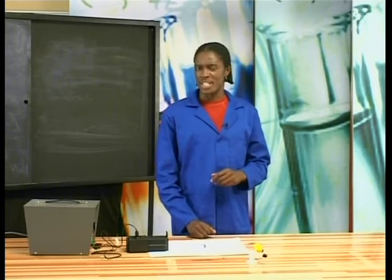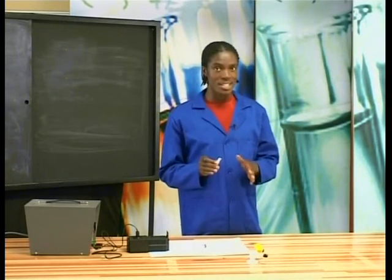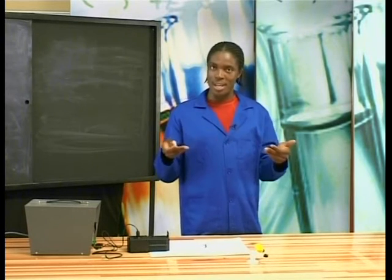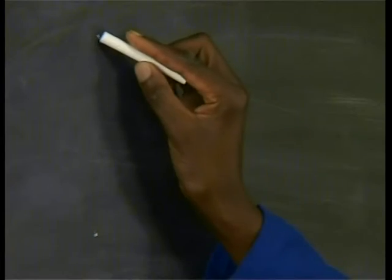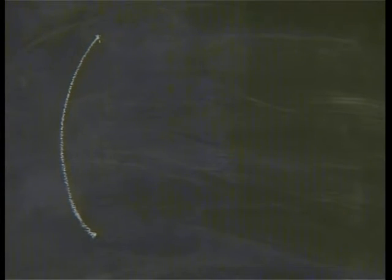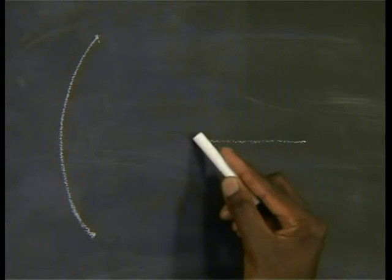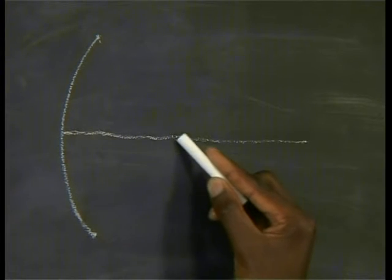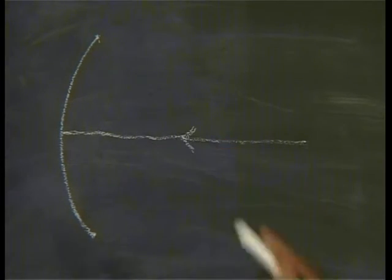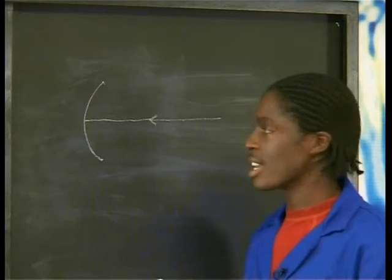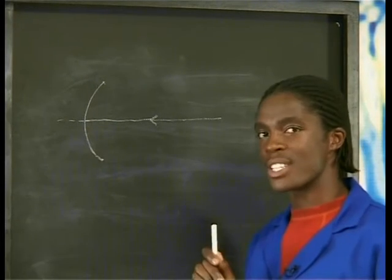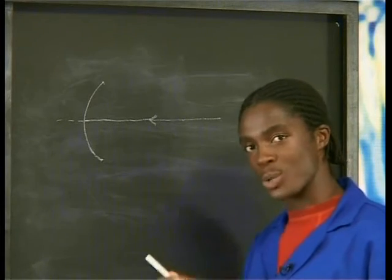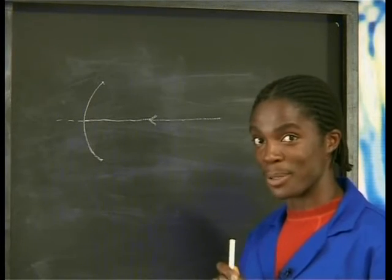Let me show you a ray diagram to explain what we've just seen. When drawing a ray diagram, remember the angle of incidence is always equal to the angle of reflection, measured from the normal, which is always at 90 degrees to the reflecting surface. Starting with the concave mirror, the ray that hits the mirror at its midpoint travels along the normal, so the angle of incidence is zero — and therefore the angle of reflection is also zero.